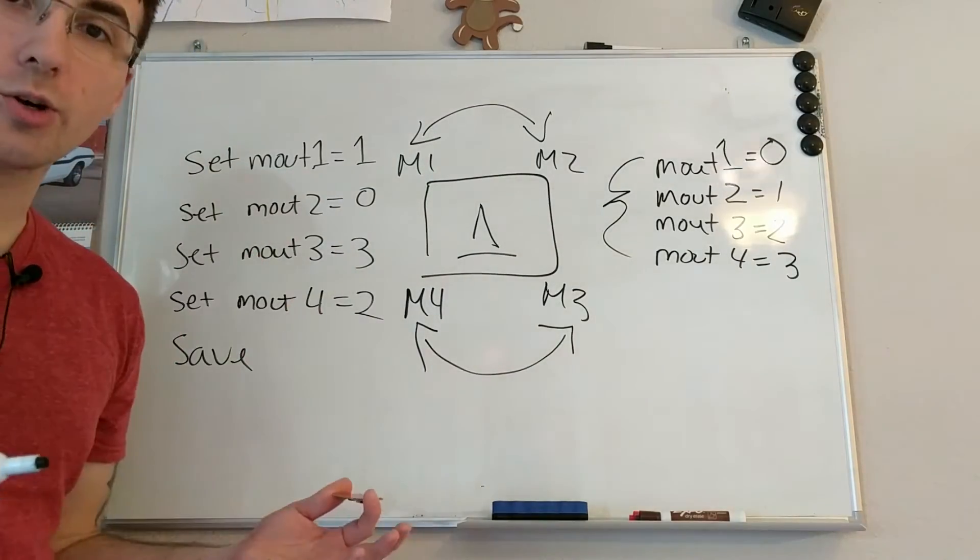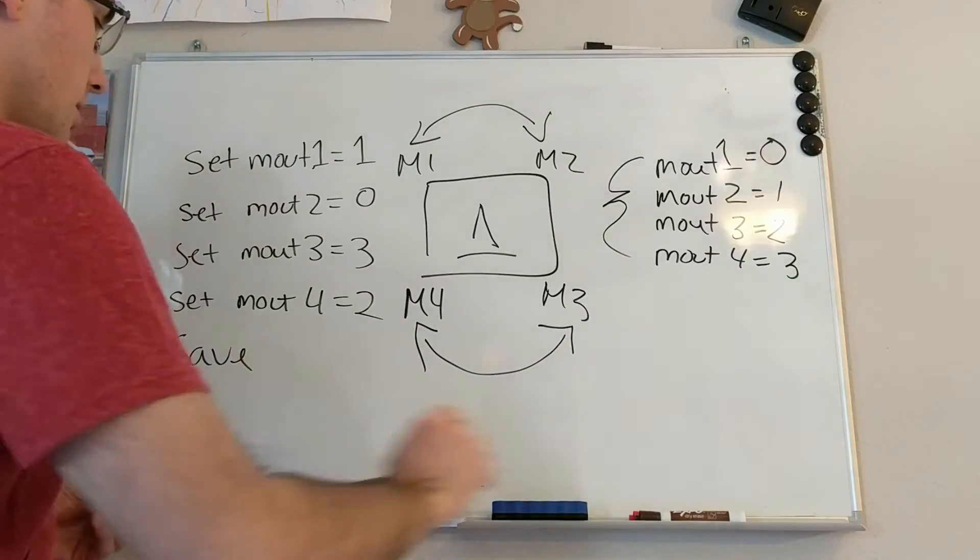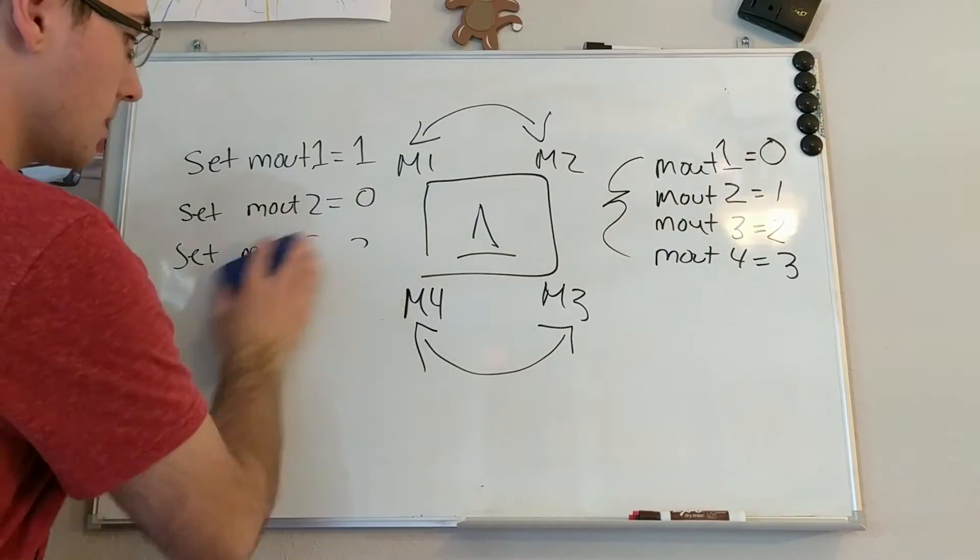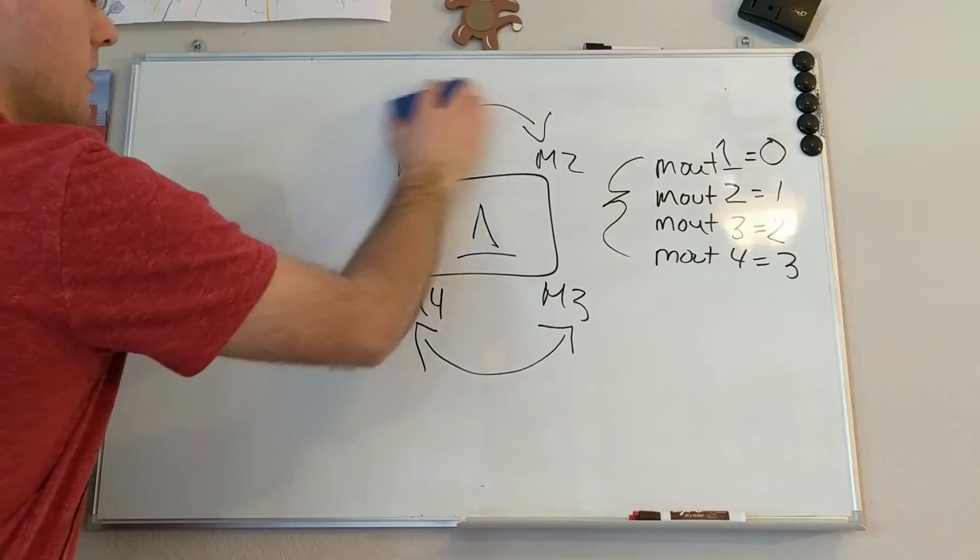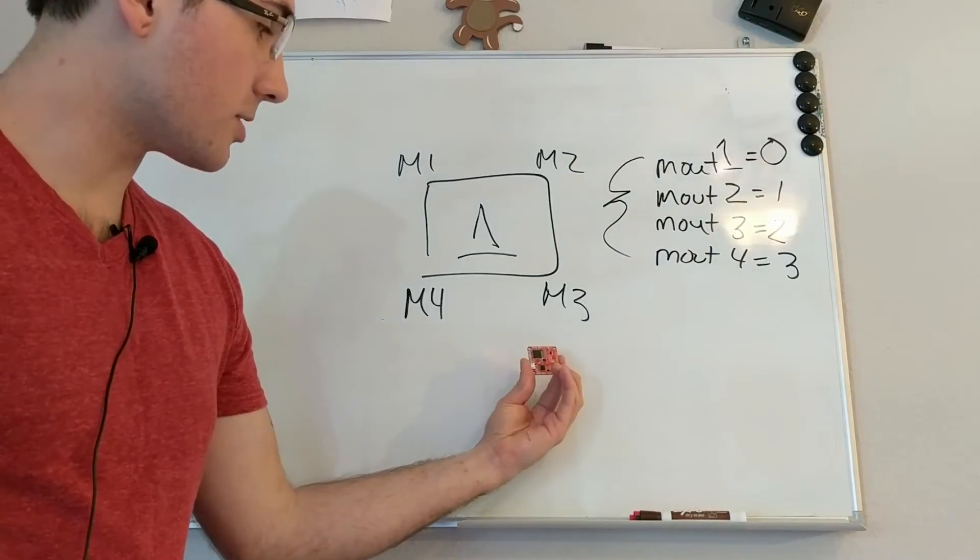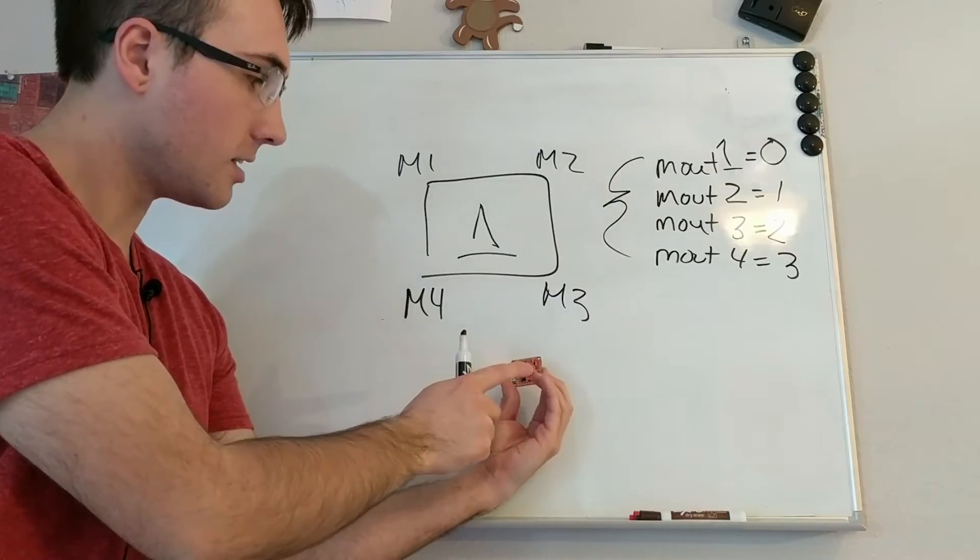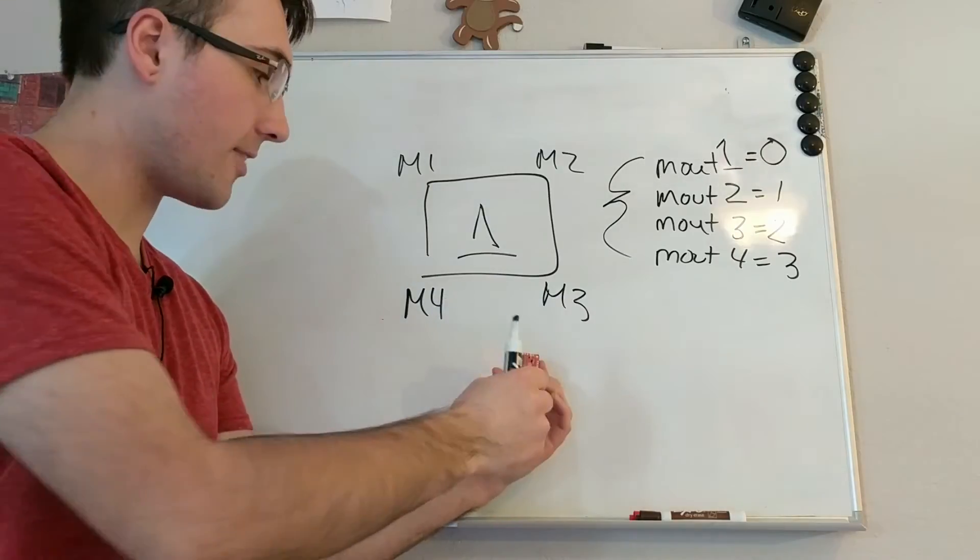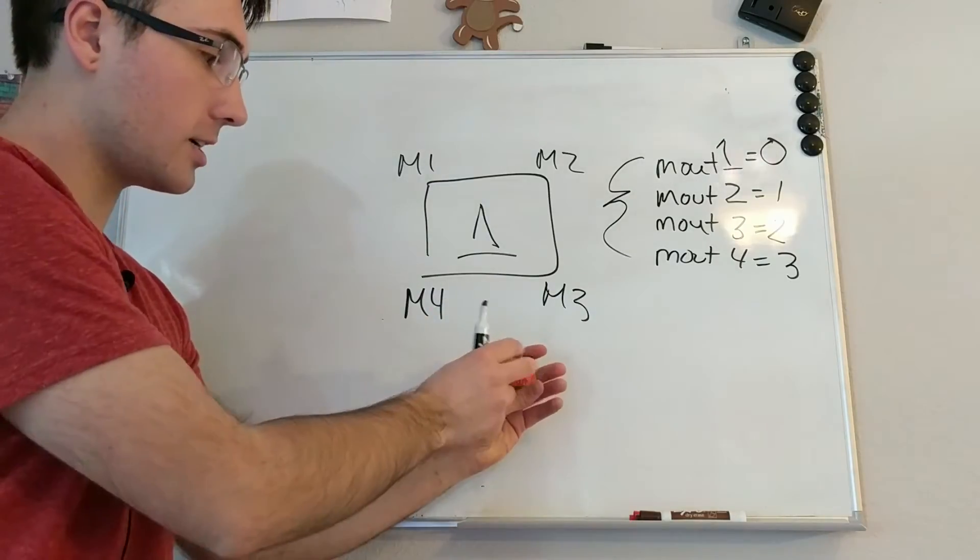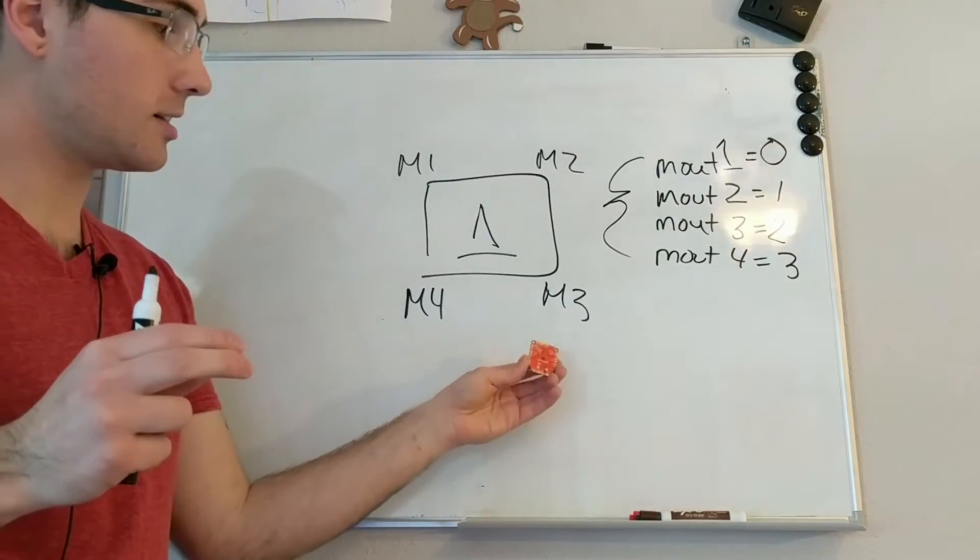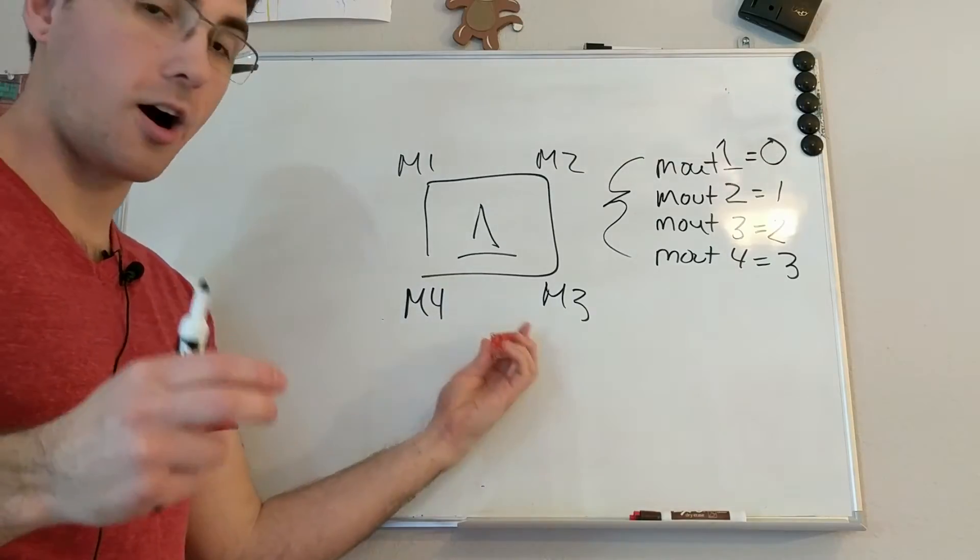But what if you want to do it a different way? So let's start over again. Say you want to flip it so that the USB port stays on the same left side but you want the flat side facing up. You flip it 180 degrees and then you rotate it 180 degrees.